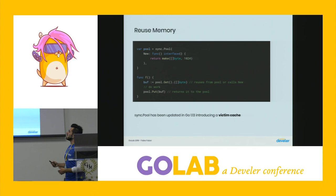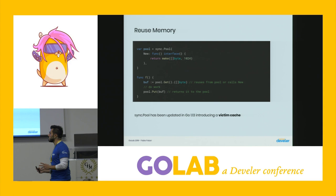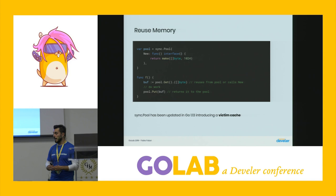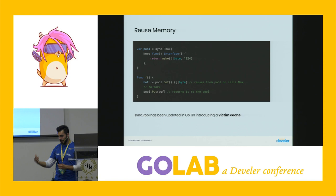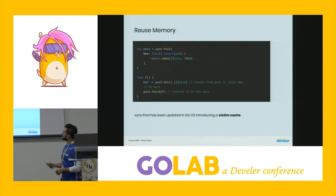If your application allocates many objects of the same type, consider reusing memory with sync.Pool. In Go 1.13, sync.Pool was improved: previously, all pooled objects were reclaimed at each GC cycle. Now, objects present when GC kicks in are moved to a victim cache and kept until the next GC cycle, at which point they are reclaimed. This two-cycle retention reduces allocation pressure for applications that reuse many objects.